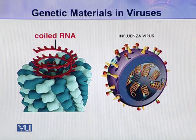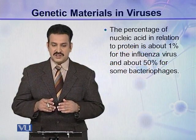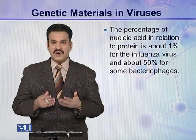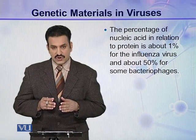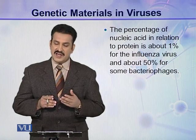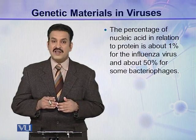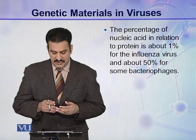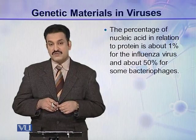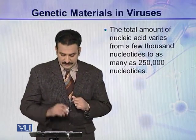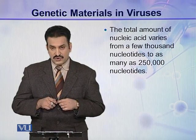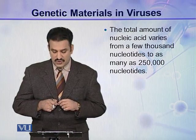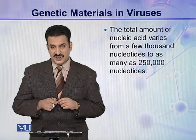So different types of genetic organizations are present in viruses. If we talk about the percentage of nucleic acid in a virus particle by weight compared to protein, the percentage of genetic material is highly variable. For example, in some viruses such as influenza virus, the amount of genetic material compared to protein is only about 1%. While in some other viruses like bacteriophages, the percentage of nucleic acid may be up to 50% of the whole virus particle. The total amount of nucleic acid varies from a few thousand nucleotides to as many as 250,000 nucleotides in a single molecule.